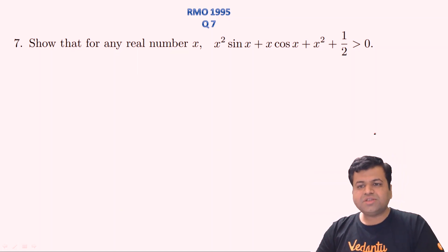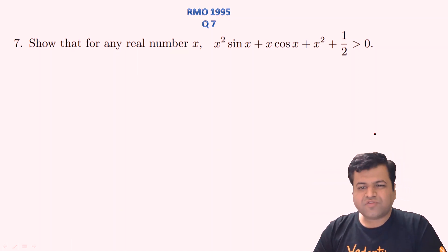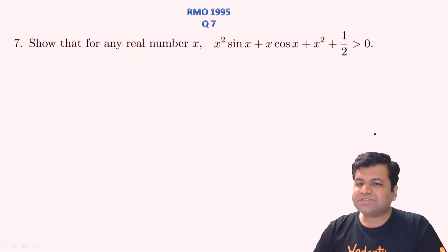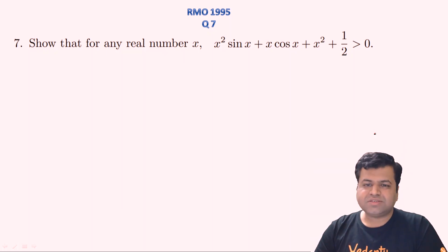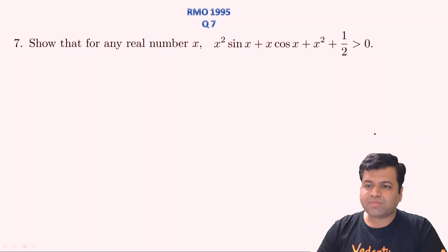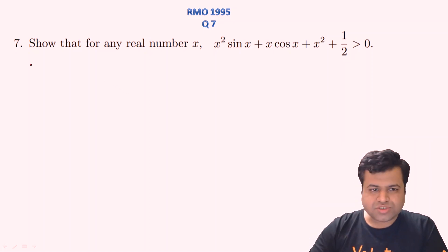Let's proceed to the next question. This is a good question involving somewhat of algebra, whole square completion and some trigonometric formulas. We need to prove the inequality: x² · sin x + x · cos x + x² + ½ > 0.